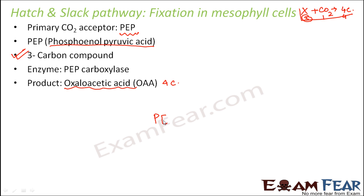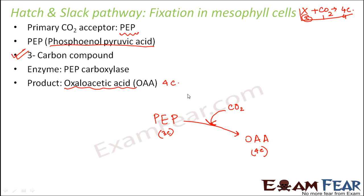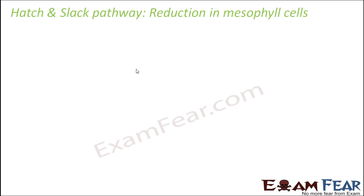So PEP, which is phosphoenol pyruvic acid, takes in carbon dioxide and forms oxaloacetic acid, a four carbon compound. This takes place in the mesophyll cells. The enzyme required here is PEP carboxylase — Rubisco is not required and is not present in mesophyll cells at all.